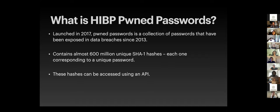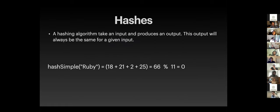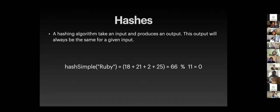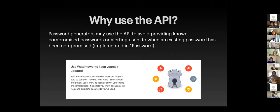There are over 600 million unique SHA1 hashes in this dataset, and each one of those hashes corresponds to a unique password. The hashes can be accessed using an API. SHA1 is a hashing algorithm — just like our earlier example — it takes an input and creates an output that is always the same for a given input.